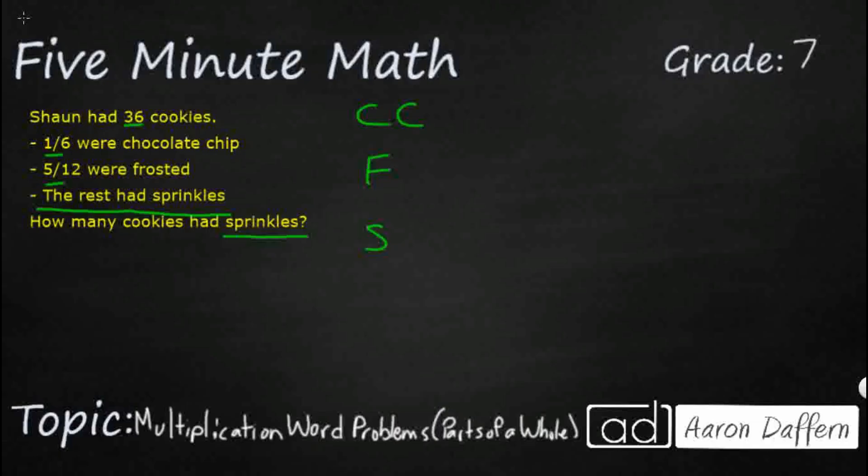Chocolate chip, they gave us a pretty standard fraction, 1/6. And then we've got frosted as 5/12. So there's a few different ways that we can solve this. I'll show you two of them. One way would be to view this as parts of a whole. The whole is 36. I've got 36 cookies. So I need to take 1/6 of 36, and I need to take 5/12 of 36. And then if I can figure out what those numbers are, I can subtract that from 36, and I can get to my sprinkles.